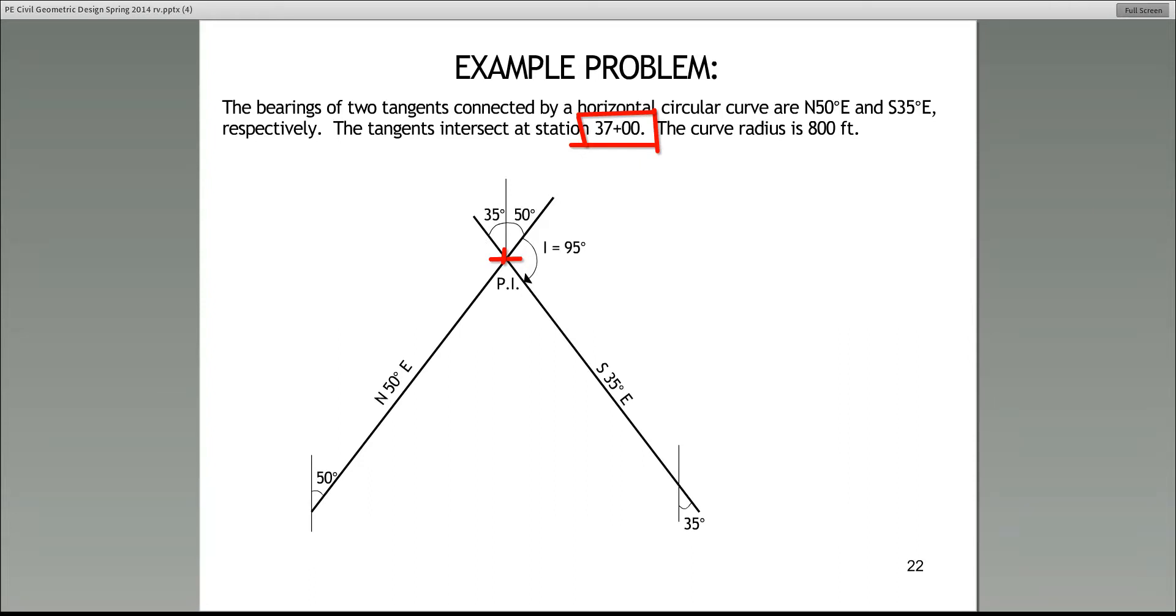If we say the station of the PI is 37 plus 00, that means there are 37 100-foot segments. So this point, PI, is 3700 feet - in terms of feet, 3700 feet from the point of beginning.